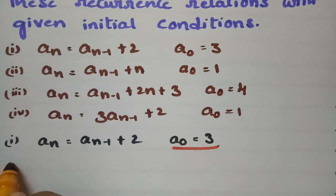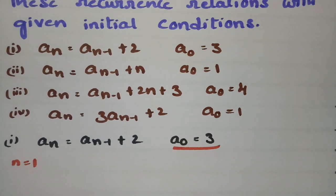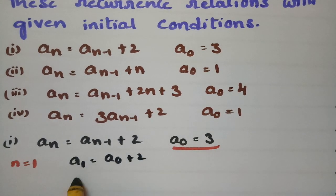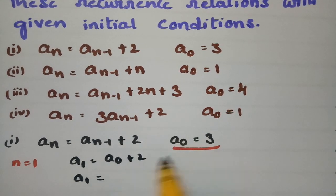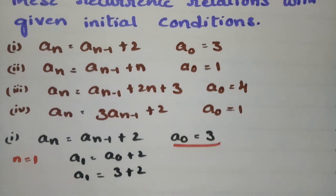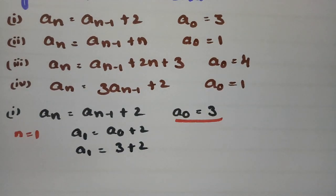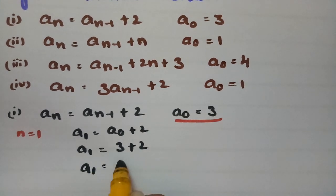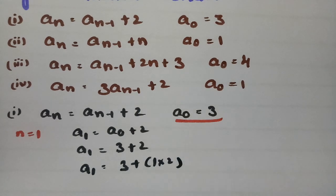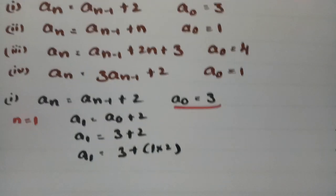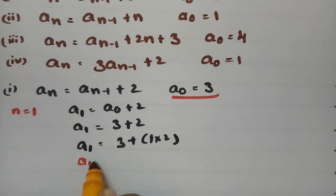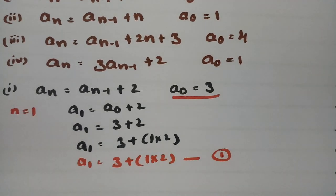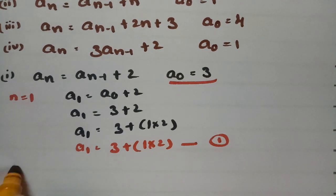Using an iterative approach, if I put n = 1, a₁ will be a₀ + 2. Since a₀ = 3, a₁ = 3 + 2, which can be written as a₁ = 3 + 1×2. This is equation 1.